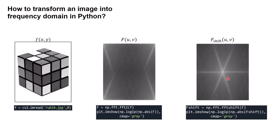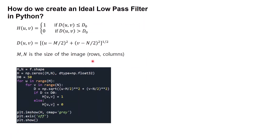Once we transform our image into the frequency domain and shift the low frequency to the center, the next step is creating the ideal low-pass filter. First, we get the size of our image f using f.shape. Then we create a matrix H with element values of 0 using NumPy's function np.zeros. This matrix H will be our ideal low-pass filter. Next, we determine our D0 — here I set D0 as 50. Using a for loop, we calculate the radius D and determine the value of matrix H: if D is less than or equal to D0, H is 1; if D is larger than D0, H is 0. Next, we plot our ideal low-pass filter.